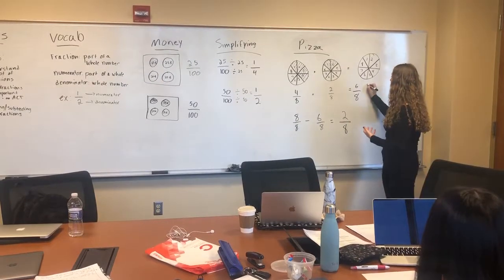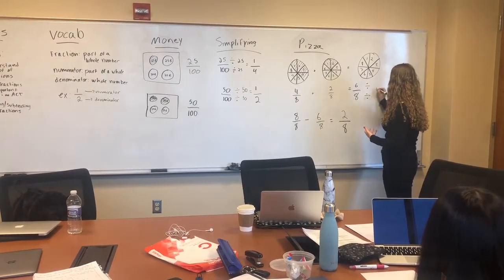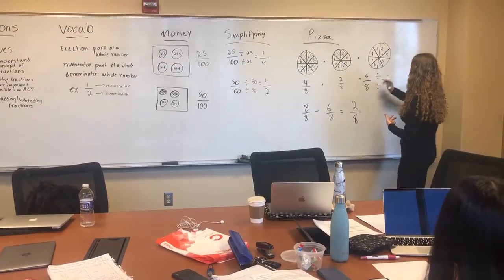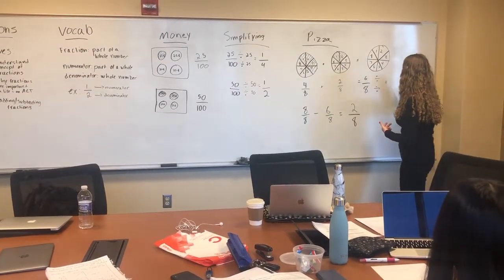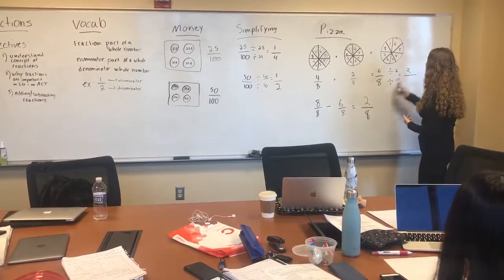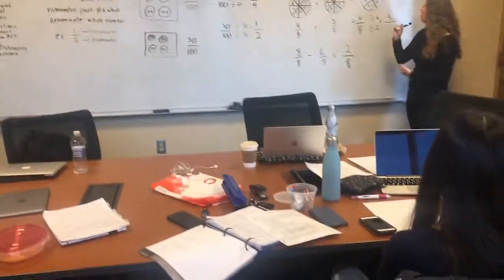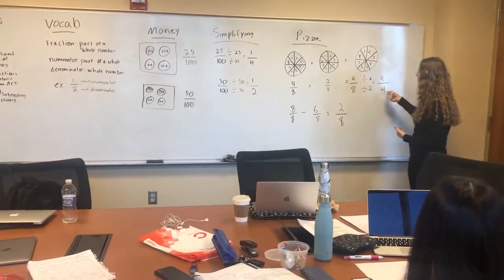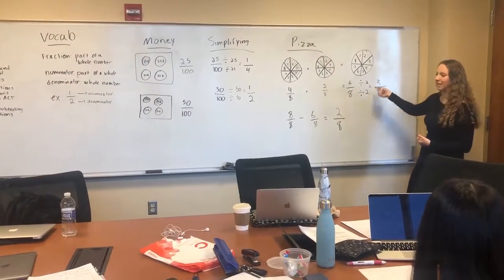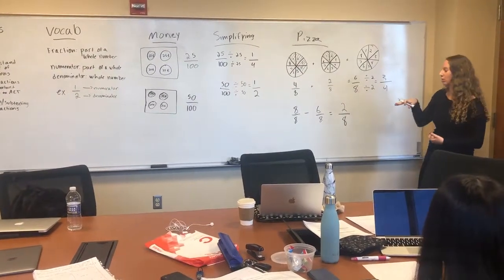Going back to what we talked about before, we want to simplify these fractions down to their simplest form. What is one common factor we could divide both six and eight by? Two. So six divided by two gives us three, and eight divided by two gives us four. So we have three fourths. We ate three fourths of the pizza, which represents the same thing as six eighths, just in the more reduced form.